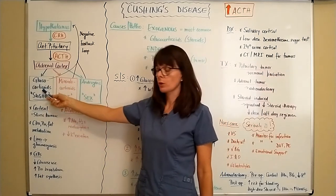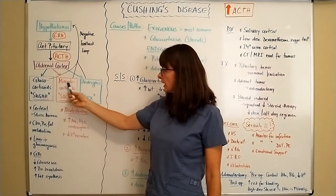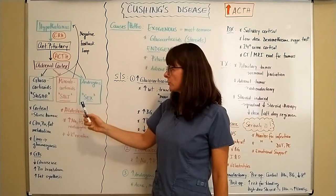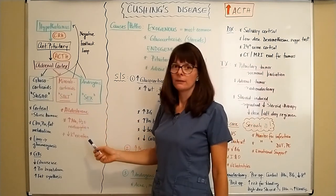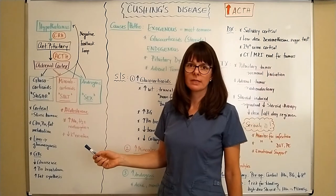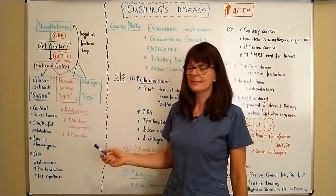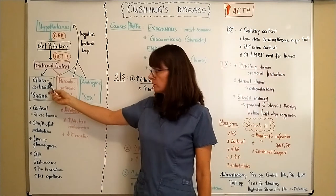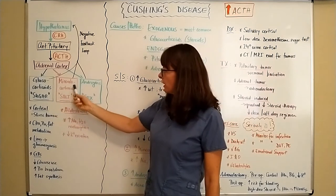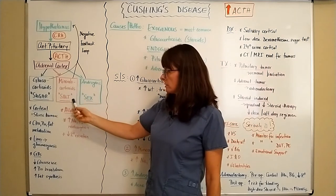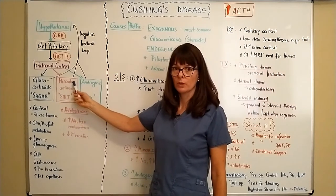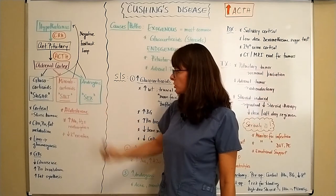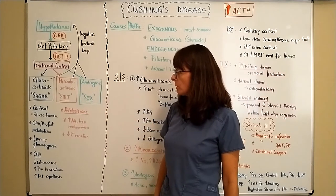First we have glucocorticoids, second mineralocorticoids, and third androgens. The easiest way to remember these are the three S's: glucocorticoids — steroid, glucose; mineralocorticoids — salt, as in sodium or minerals; and then androgens, which are the sex hormones.